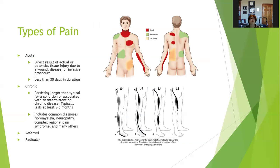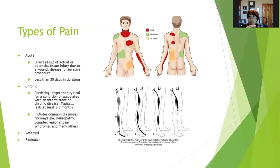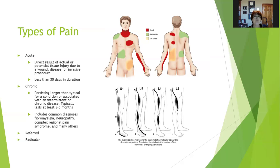Pain can be acute or chronic, and it can also be referred or radicular. Acute pain is a direct result of actual or potential tissue injury due to wound, disease, or invasive procedure, and it's usually less than 30 days in duration and well localized. Chronic pain persists longer than typical for a condition or is associated with intermittent or chronic disease, and typically lasts at least three to six months. Common chronic pain diagnoses include fibromyalgia, neuropathy, complex regional pain syndrome, and many others.